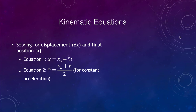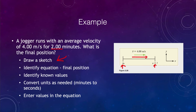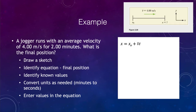Our first example involves a jogger running with an average velocity of four meters per second for two minutes. We want to know the jogger's final position. The first thing we want to do is draw a sketch — it doesn't have to be fancy or artistic, just something to put things in perspective and show what you're looking for. In this case we have the initial position, the final position which is what we're looking for, and we mark the velocity as a vector moving to the right at four meters per second. Next, let's identify our equation, keeping the image in the upper right to refer to.